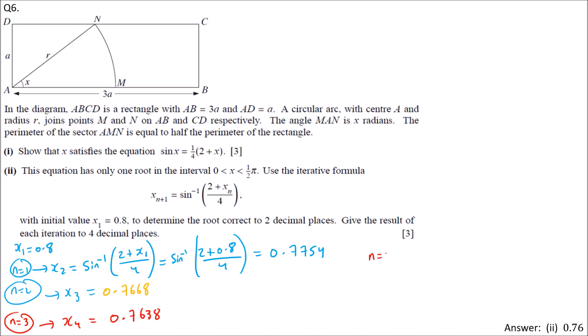Next, we replace N by 4 to get X_5, which equals 0.7628. Looking at 2 decimal places, we do one more iteration to confirm. X_6 equals 0.7625 to 4dp.